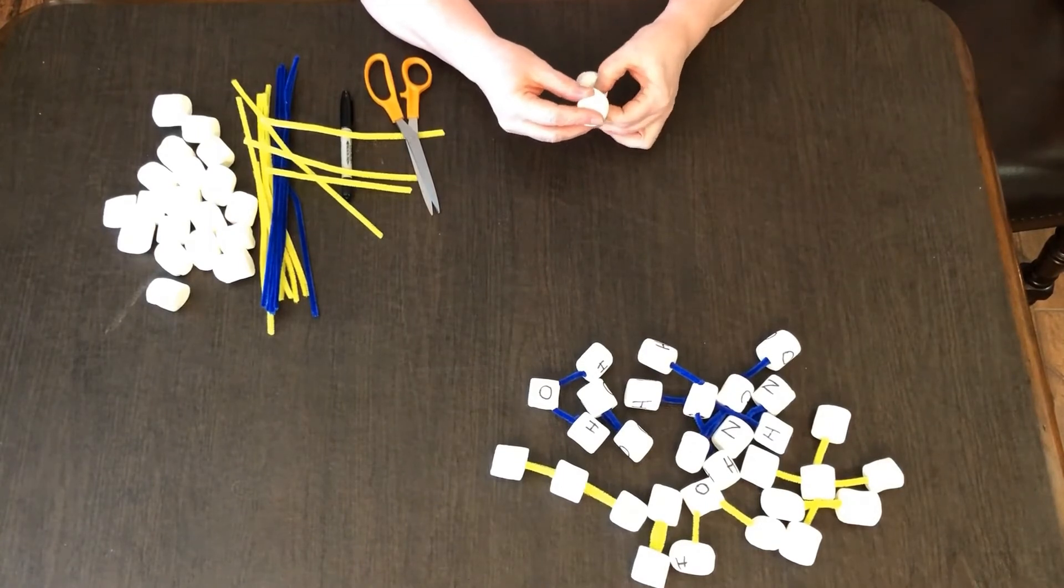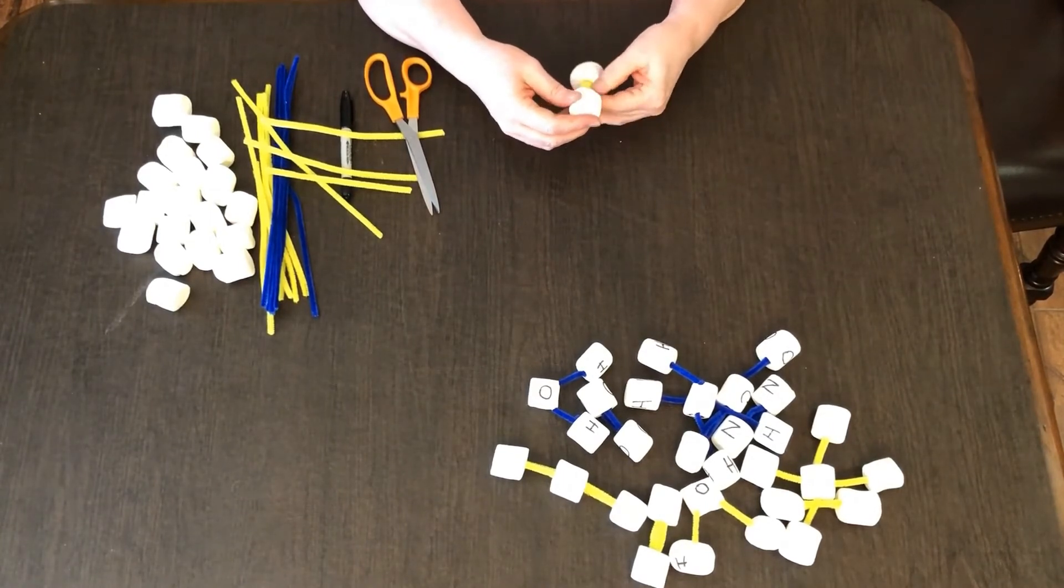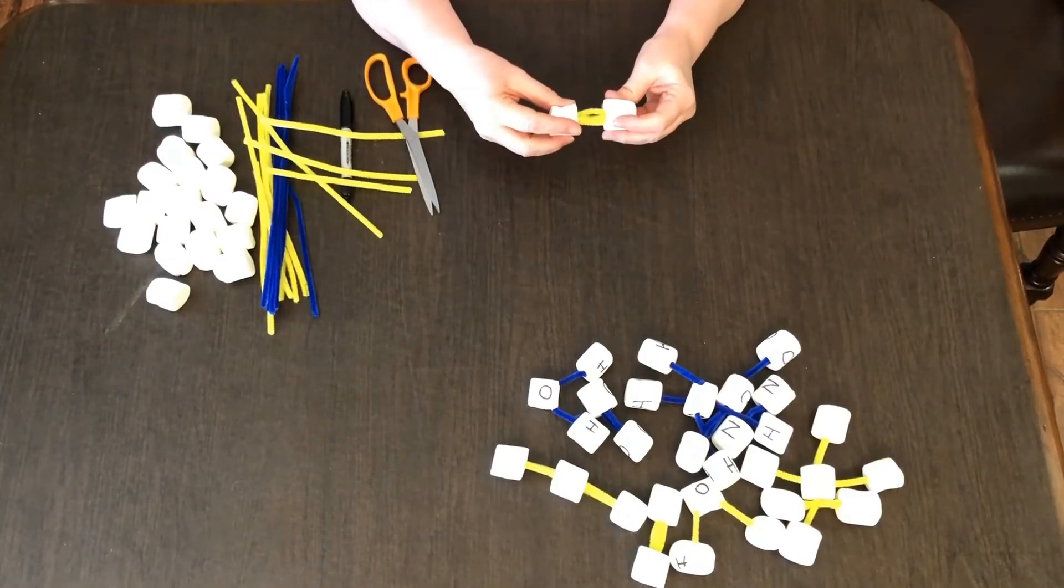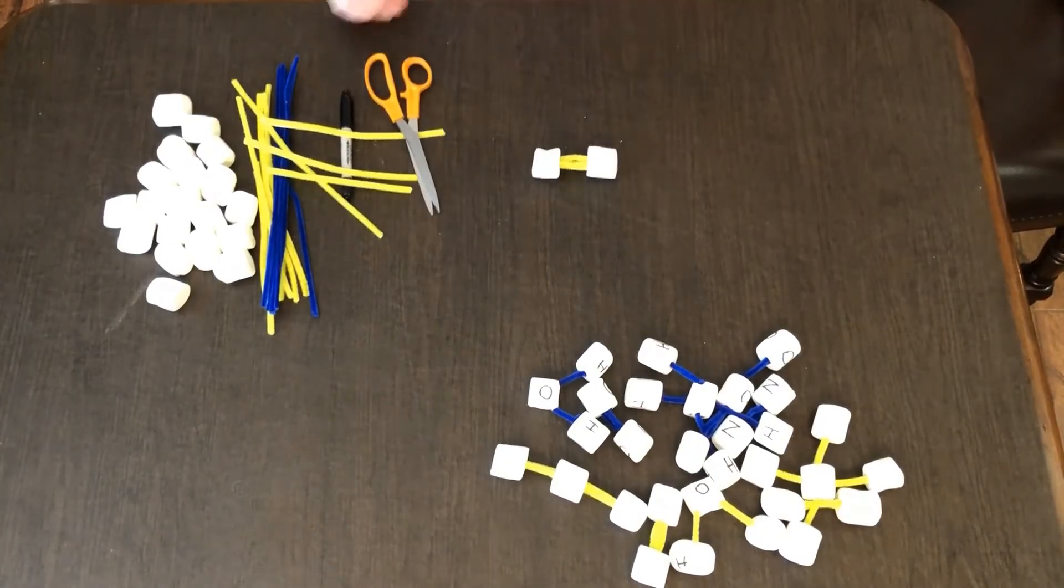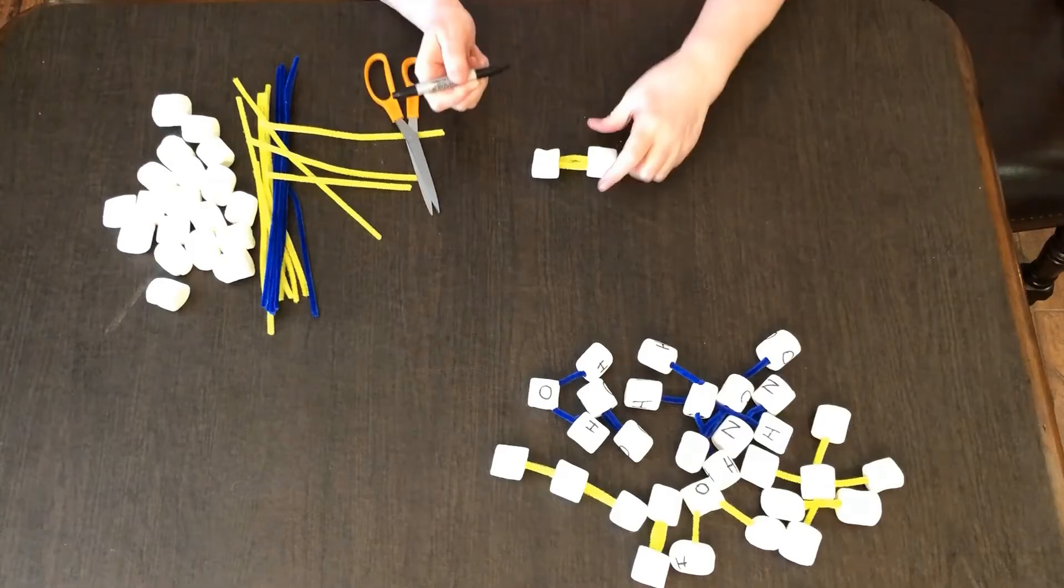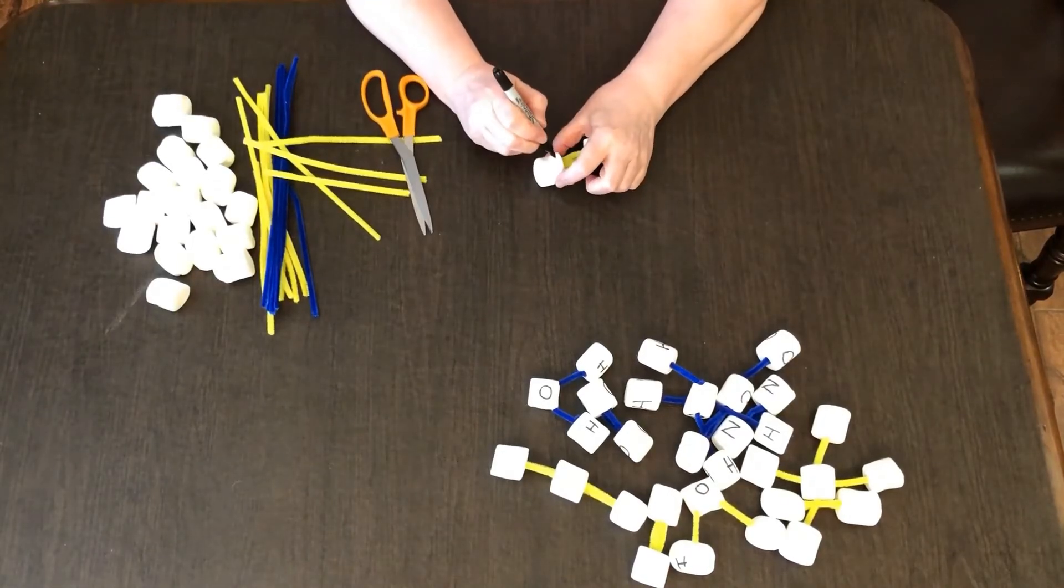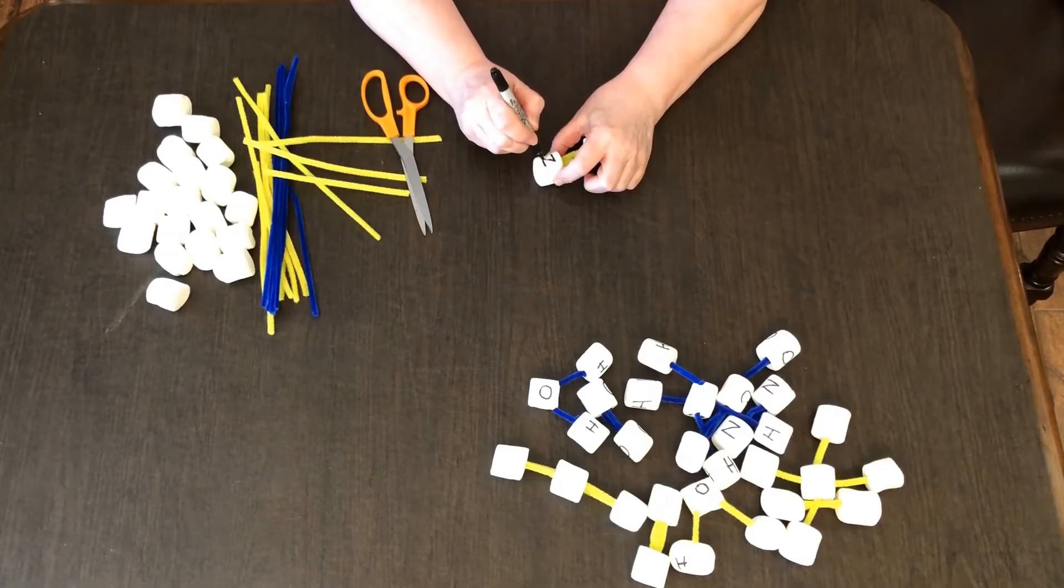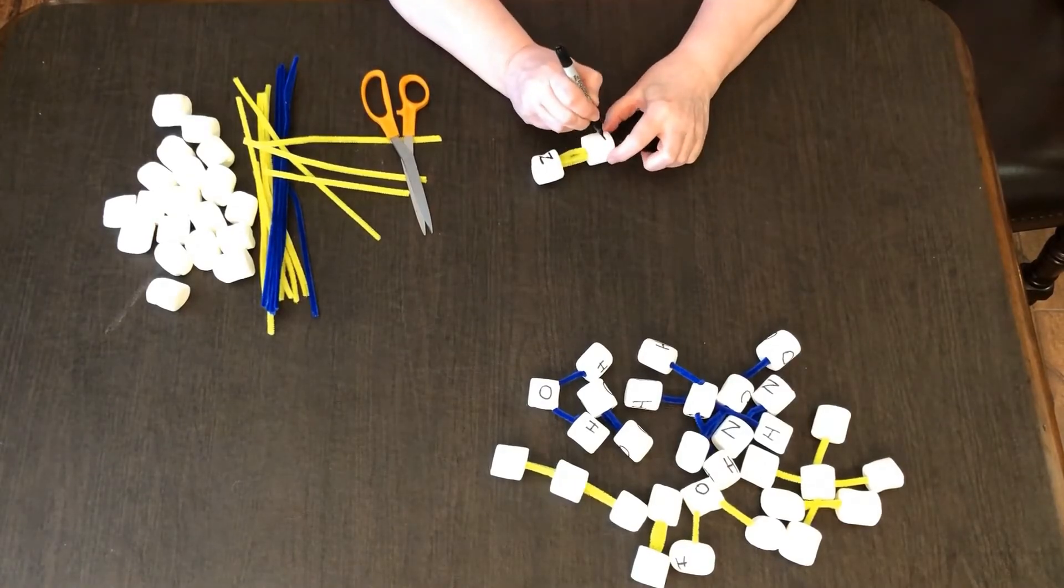You just push them in a little ways, and that's the molecule. Then you'll take a Sharpie marker—it's easy to write on them since they've dried out a little bit—and mark them.